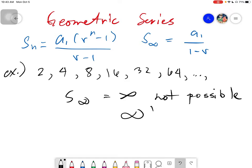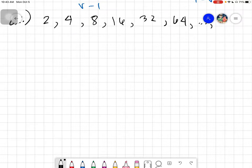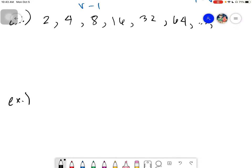So now, this is when we use S sub infinity. So let's have another example. Say we have 1, 0.5, 0.25, what else? This is divided by 2. 0.125, 0.125 divided by 2, it's 0.0625 and so on.